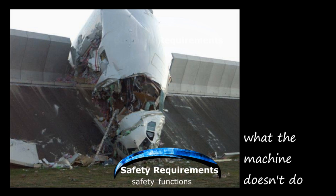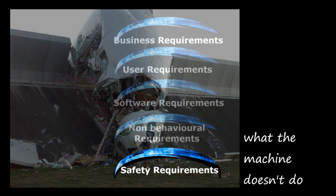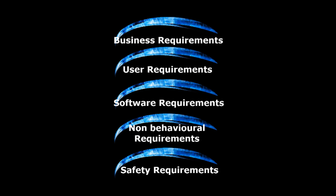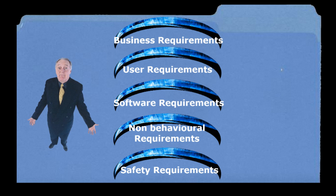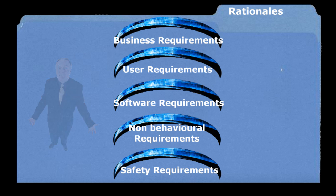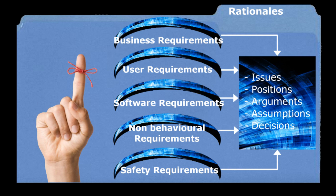Then there's the issue of what the machine doesn't do. We need to consider risk — what could go wrong and what should we do about it? Finally, organisations routinely forget why they stated a requirement. Corporate memory loss can be expensive. So to jog our collective memory, we introduce the concept of rationales.